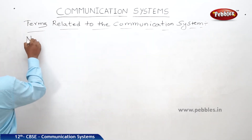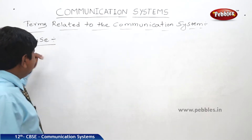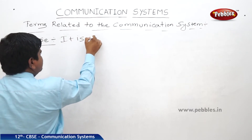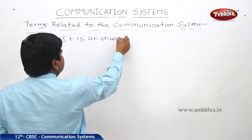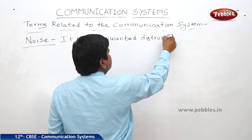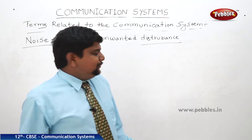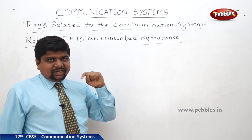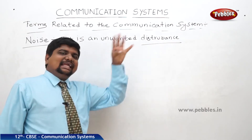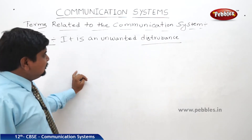Next one is noise. What is the meaning of noise? It is an unwanted disturbance — an unwanted disturbance to send a signal from one point to another point. Maybe these disturbances are due to internal or external processes. Sometimes these disturbances will come from outside of the signal also. So this is said to be noise.